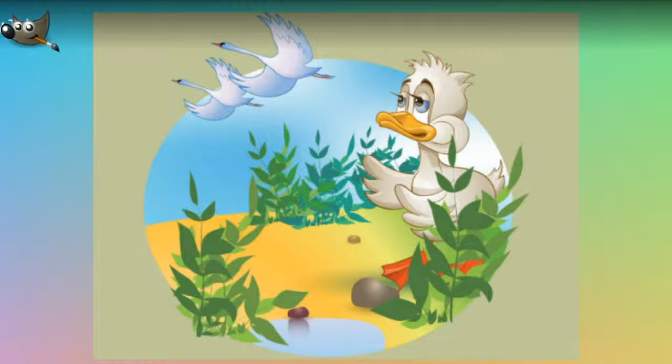And so the duckling was admitted on trial for three weeks, but no eggs came. And the cat was master of the house and the hen was the lady, and always said "we" in the world, for she thought they were half the world and by far the better half.